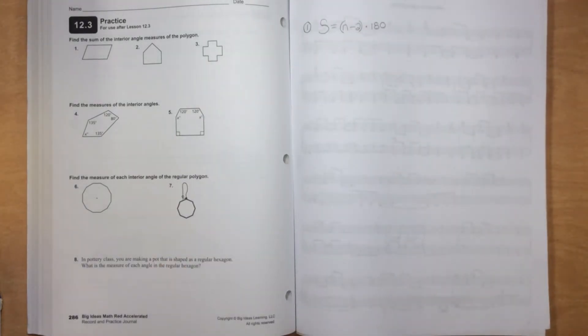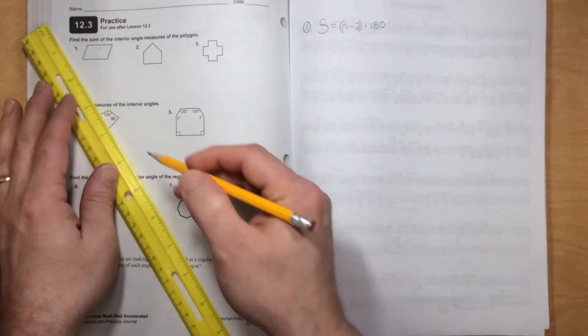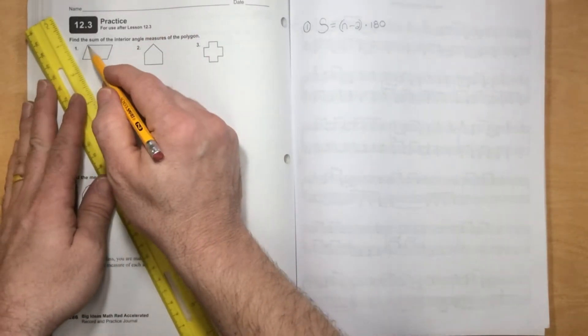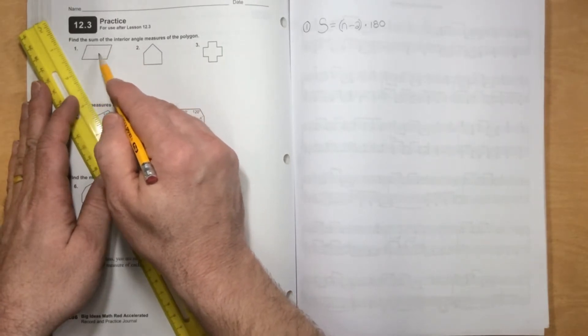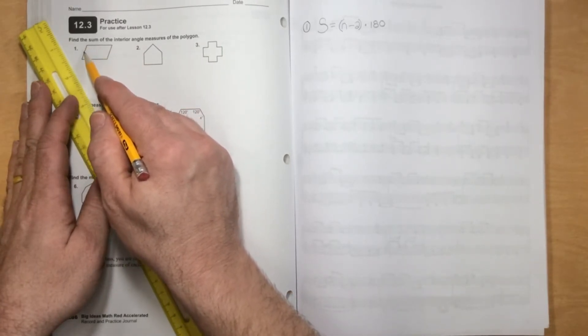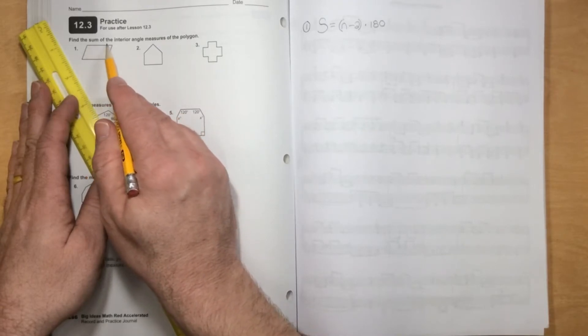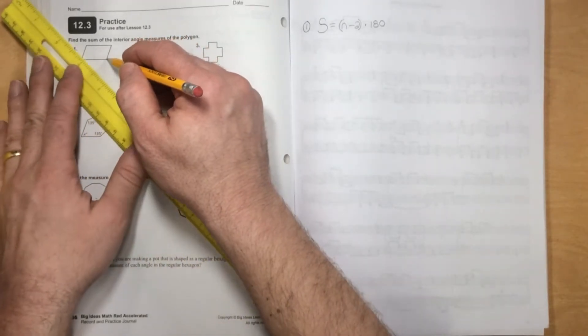And the reason we have that is because if you just take one vertex, we'll take this one up in the left-hand corner here, and you draw lines to make as many triangles as you can. Well, I can't draw a line between these two because that side already exists. Same with that top right there. But I can draw a line right here.